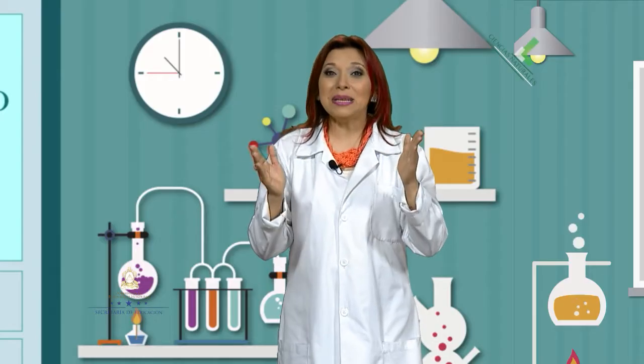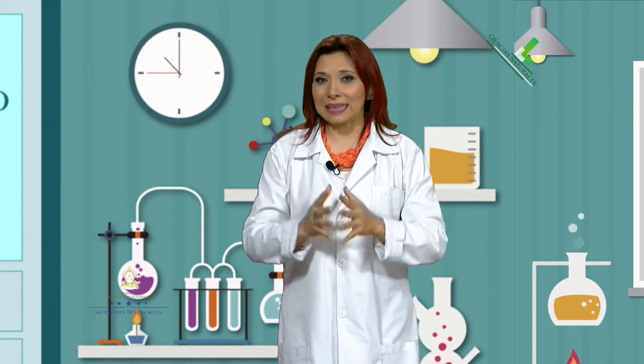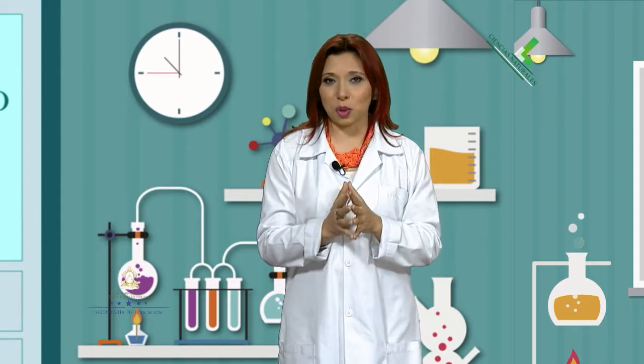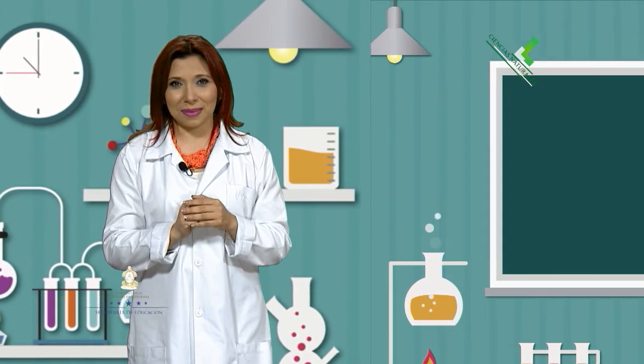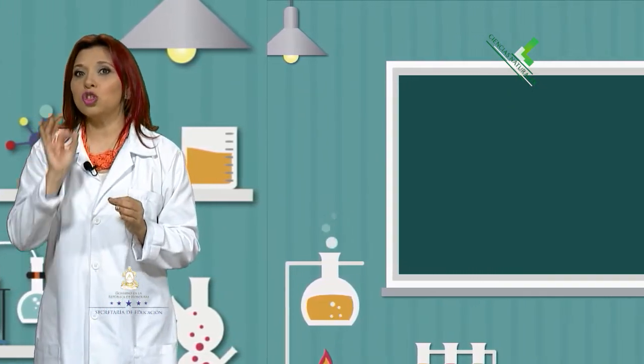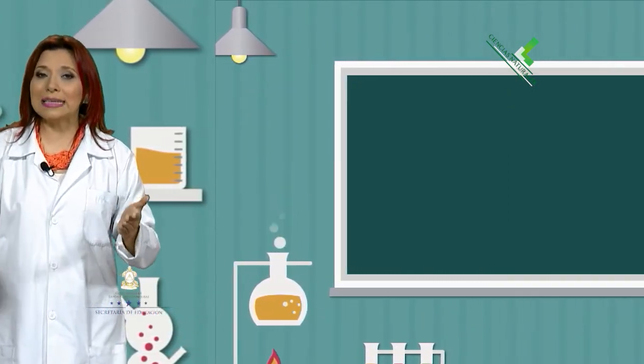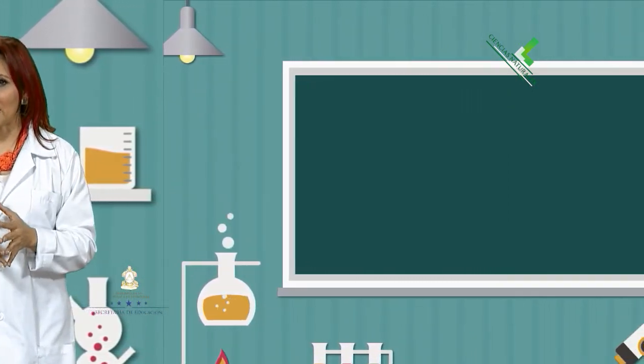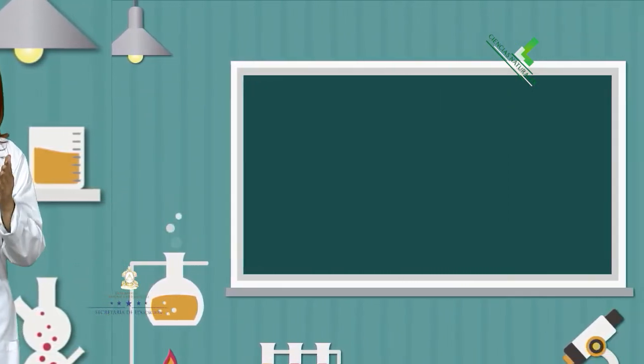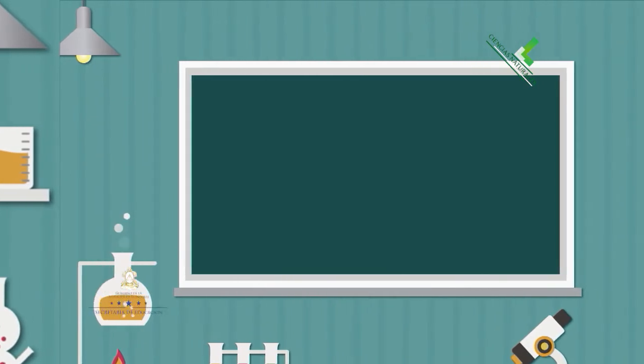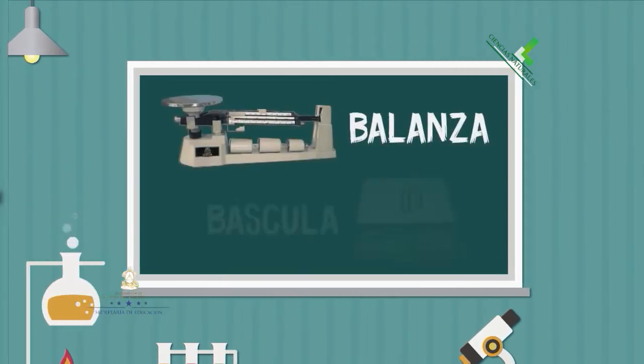Ya mencionamos las características de los instrumentos de medición. Ahora conoceremos algunos. Comenzamos mostrando los instrumentos que sirven para medir masa. Por ejemplo, la balanza y la báscula.